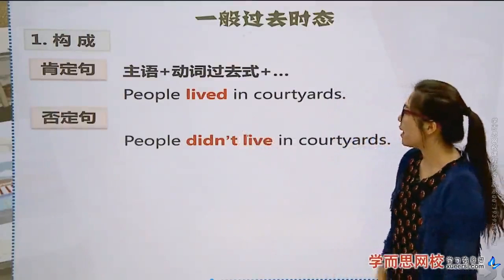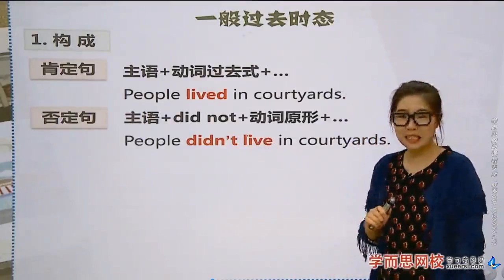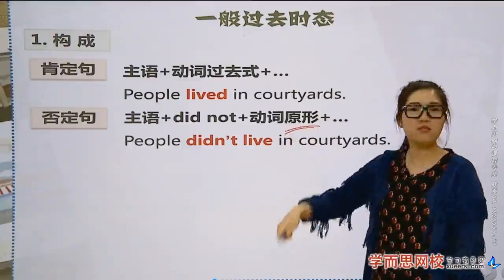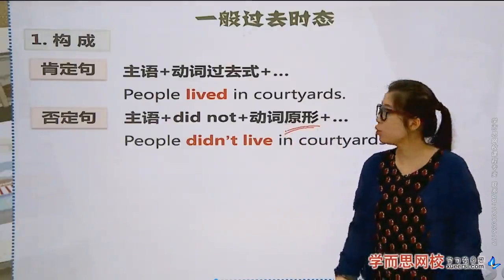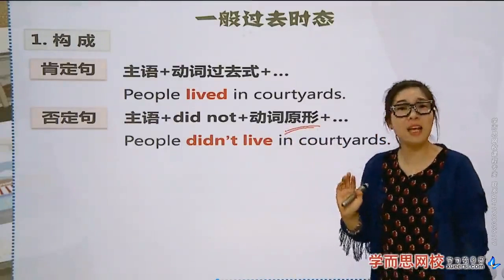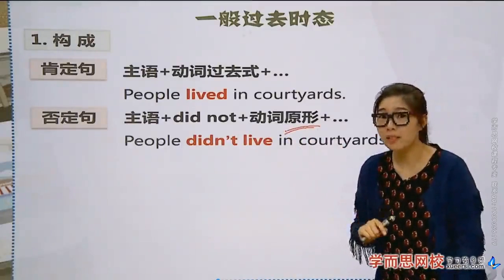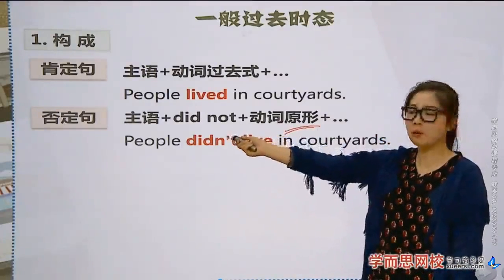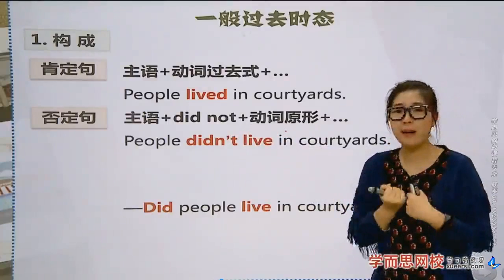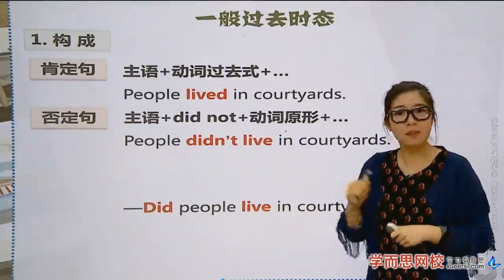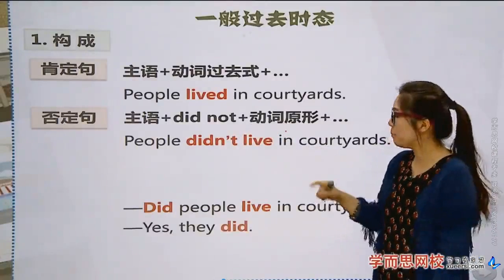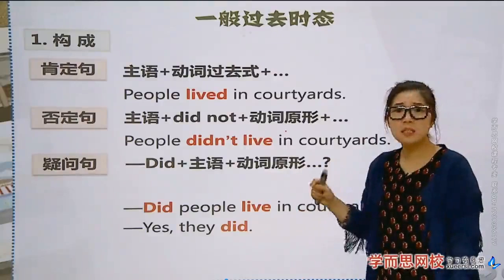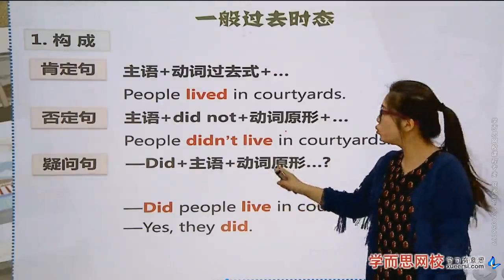So the structure for negative is: Subject + didn't + base form of verb. Remember this — 'did' has already taken the past tense role, like a scapegoat. So the verb after it stays in its base form. For yes/no questions, move the auxiliary verb 'did' to the front: 'Did somebody do something?'